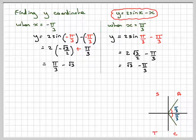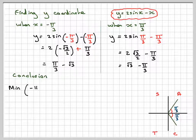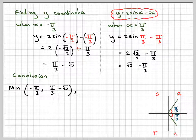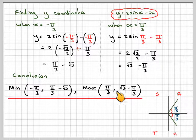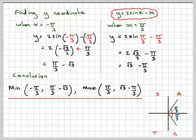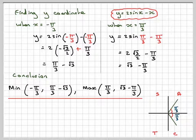Without a calculator, there's not a lot more we could do. So the conclusion is: the minimum point at (minus pi over 3, pi over 3 minus root 3), and a maximum point at (pi over 3, root 3 minus pi over 3). This has been a video to show you how to find the stationary points and determine the nature of a trigonometric curve y equals 2 sin x minus x. I hope you've enjoyed this video. Thank you very much for watching.